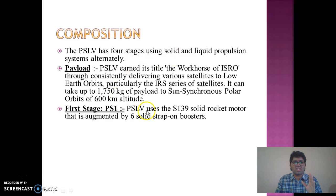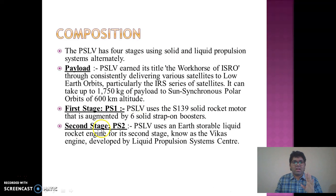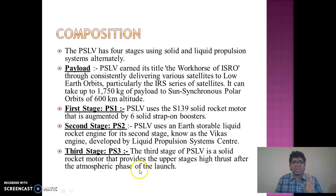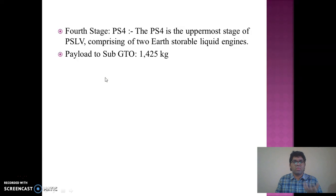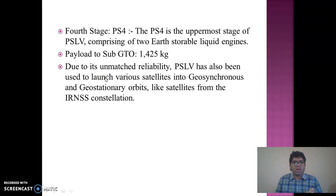The four stages of PSLV alternate between solid and liquid propulsion. The first stage consists of a solid rocket motor augmented by six solid strap-on boosters. The second stage uses a Vikas engine developed by the liquid propulsion system. The third stage is a solid rocket motor providing high thrust after the atmospheric phase. The fourth stage, PS4, is the uppermost stage comprising two earth-storable liquid engines, with a payload to sub-GTO of 1,425 kg.